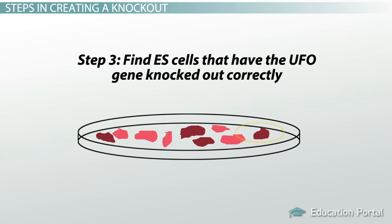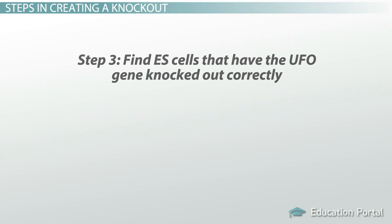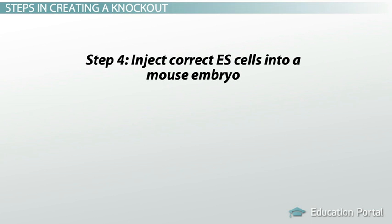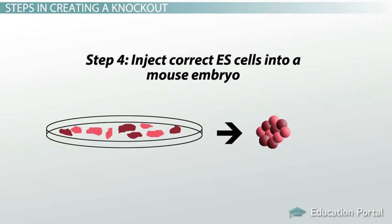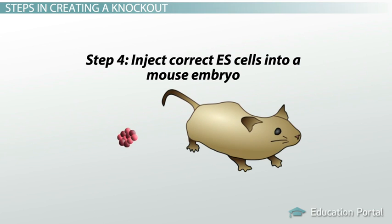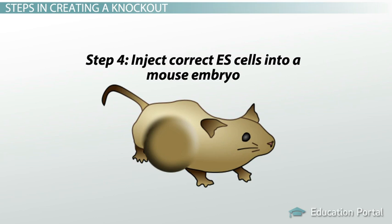Now that we have ES cells with the right genotype, in step four we will inject the correct ES cells into a mouse embryo. These transplanted ES cells are heterozygous for the knockout — they will have one wild-type copy of UFO on one chromosome, but are missing their second functional copy of UFO. Additionally, this mouse embryo has both knockout ES cells and the original non-knockout ES cells, so the mouse embryo will grow up with both kinds. We will then let this little embryo grow up inside a mommy mouse.